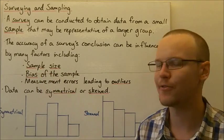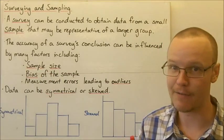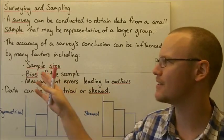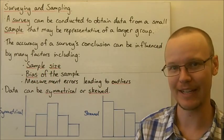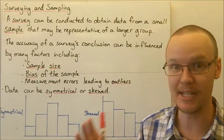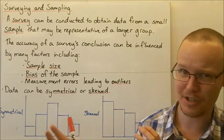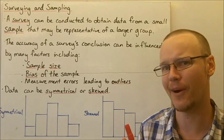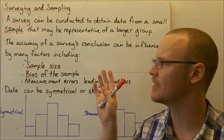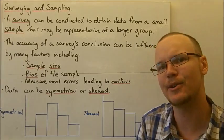For example, finding, getting data from, maybe we're looking at frog populations and the location that we actually get the data from is from a city and not the countryside, that's probably going to skew the data.